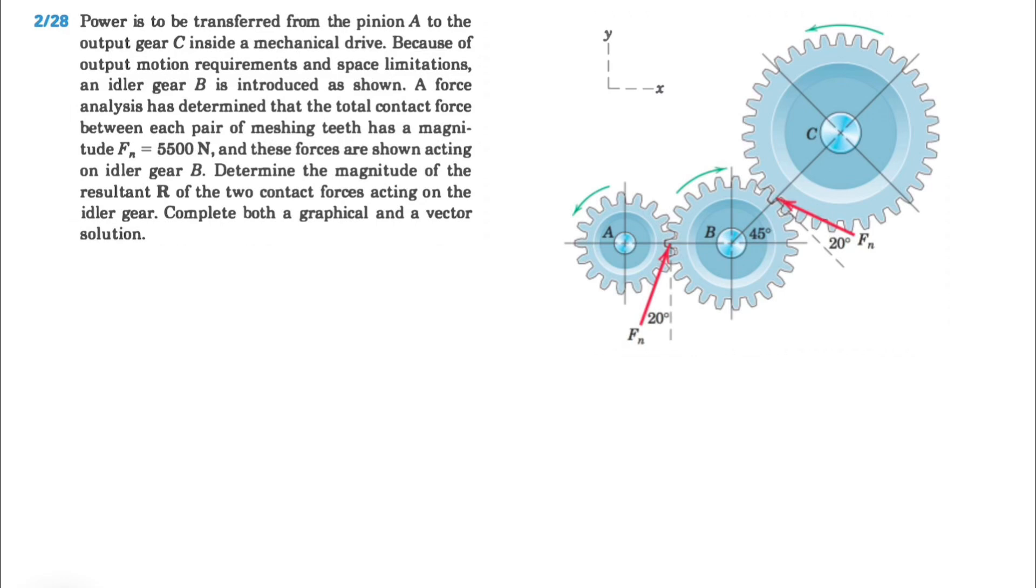All right guys, welcome back. We're going to be solving question 28 from the second chapter of the Merriam textbook. In this question, power is to be transferred from the pinion A to the output gear C inside a mechanical drive. Because of output motion requirements and space limitations, an idler gear B is introduced as shown.